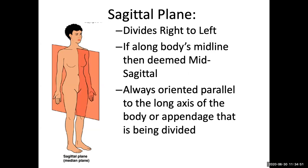The sagittal plane is going to divide us into right and left. It's a vertical plane that lies along the Y axis of the body. There's a specialized plane within the sagittal plane where if we're directly along the middle of the body — what's referred to as the midline — then we're equally dividing the body into right and left. This is what's referred to as mid-sagittal.